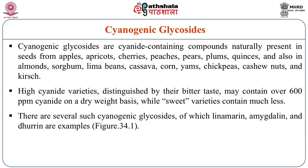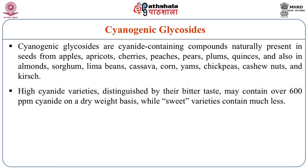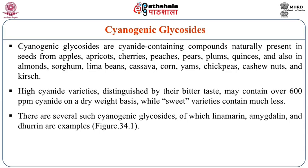The second category is cyanogenic glycosides. These are cyanide-containing compounds which are naturally present in the seeds obtained from apples, apricots, cherries, peaches, pears, plums and also in almonds, sorghum, lima beans, cassava, corn, yam, chickpeas, cashew nuts and other fruits and vegetables. High-cyanide varieties, distinguished by their bitter taste, may contain about 600 ppm cyanide on a dry weight basis. Several such cyanogenic glycosides exist, of which linamarin, amygdalin and dhurrin are examples.